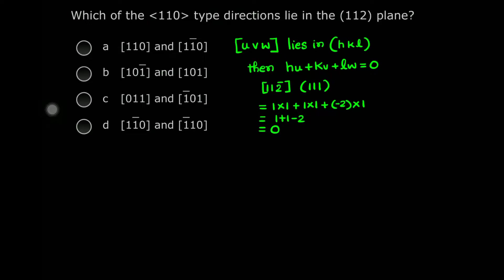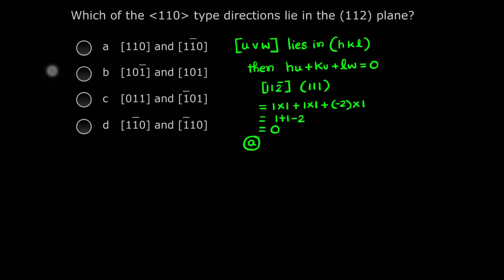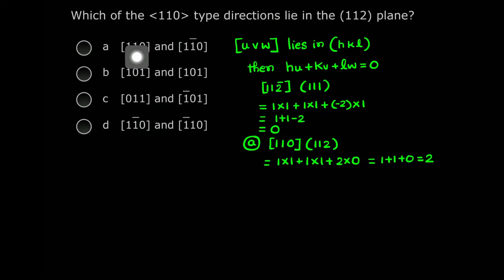So in this question, we have to take the dot product of each candidate direction with the plane vector (1 1 2) and check whether the result is 0 or not. Let's check the first option: direction [1 1 0]. The dot product with (1 1 2) is 1×1 + 1×1 + 2×0 = 1 + 1 + 0 = 2. It means this direction does not lie in that plane.